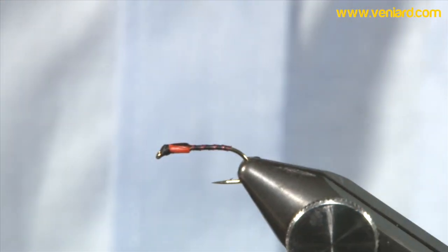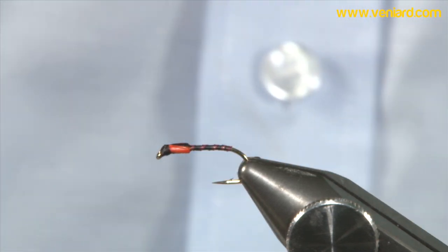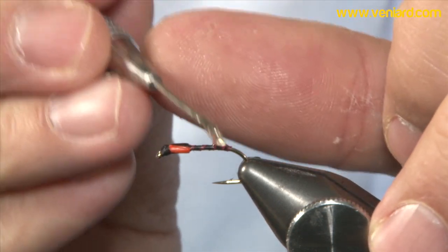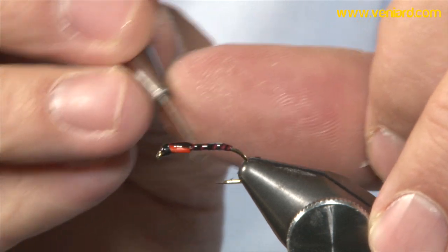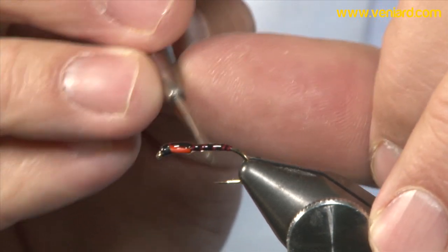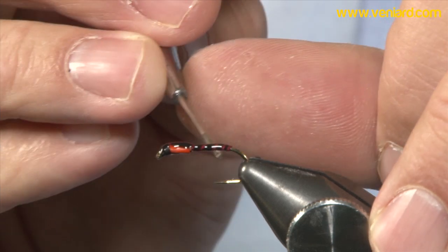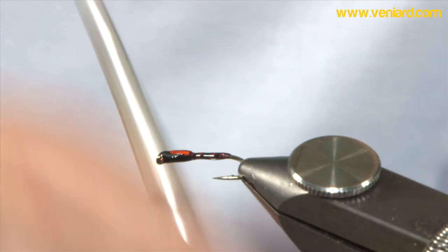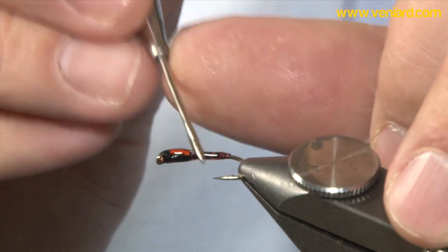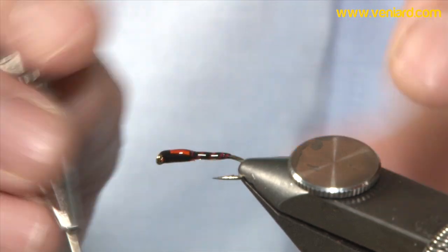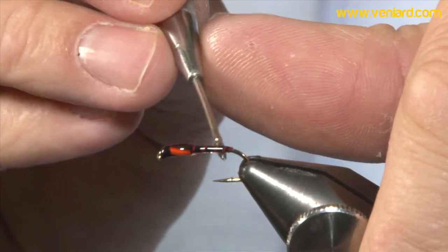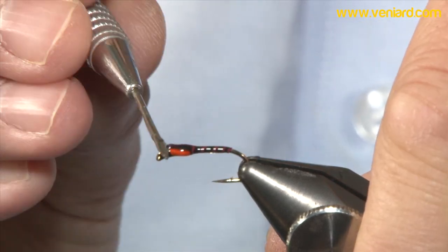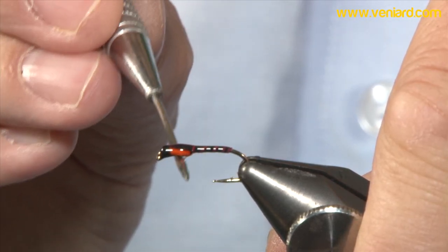And then just take your varnish, give it a good coating, leave the whole thing to dry. And then coat it again. Or, you could use a UV curing resin. I like varnish. I know it's fiddly. It takes a little longer. But I just think it looks that much better.